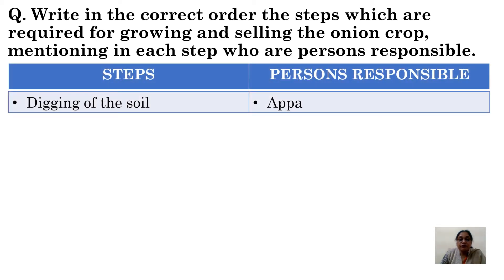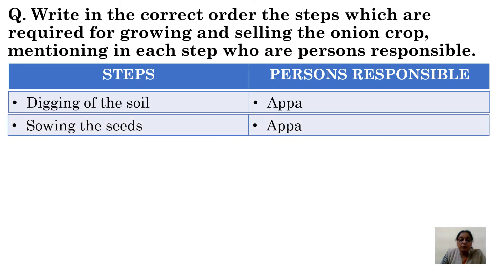The first step is digging the soil. First, they dug the soil of their field — this was done by Baswa's Appa. Then the second step was sowing the seeds, which was also done by Baswa's Appa.